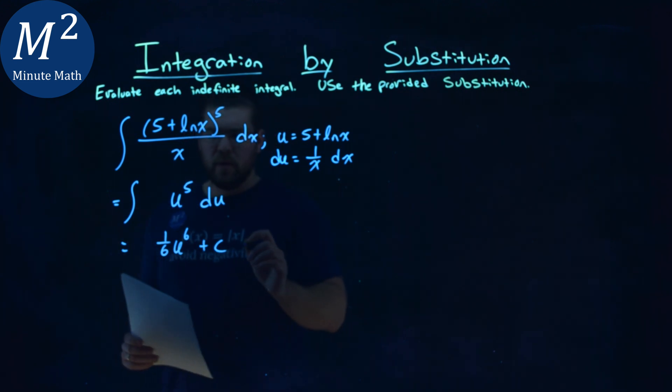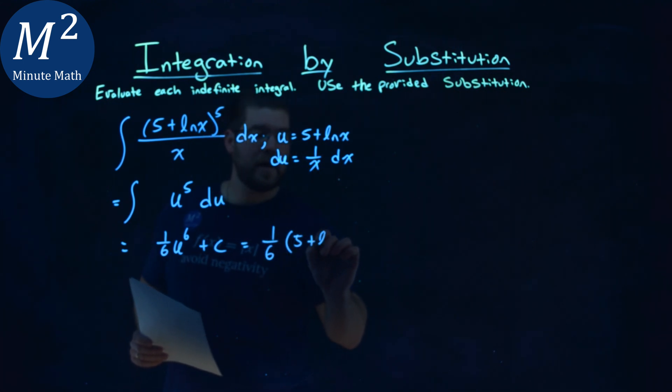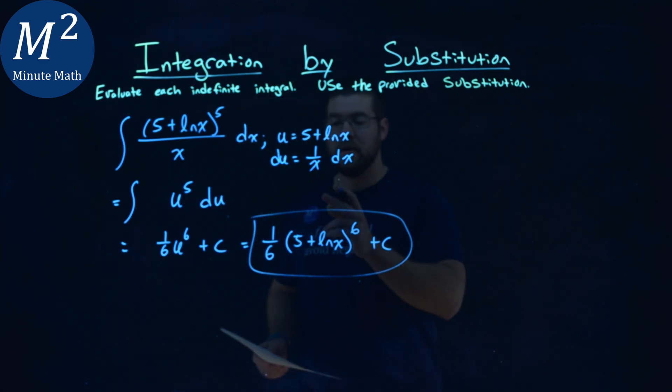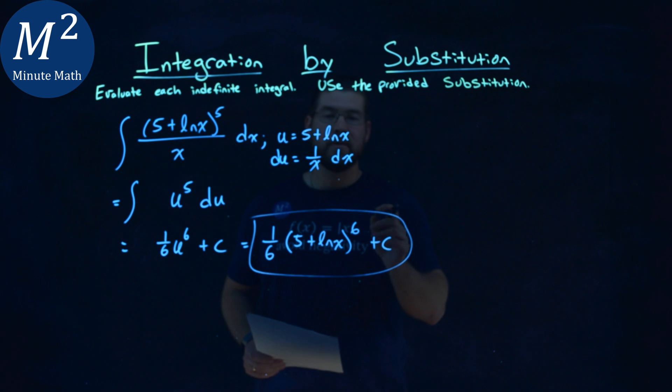From there, we just substitute u back in. It's pretty simple here. 1/6 comes out front, and u is (5 + ln(x))^6 plus c. And that is it. Our final answer is 1/6(5 + ln(x))^6 + c.